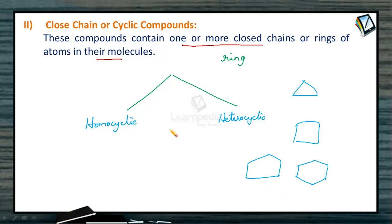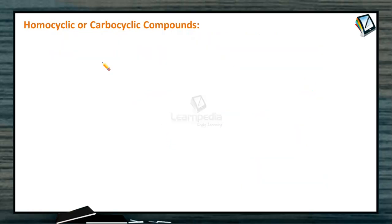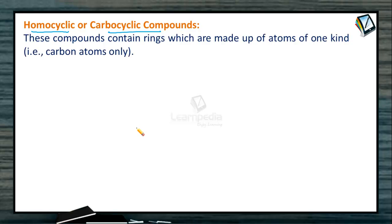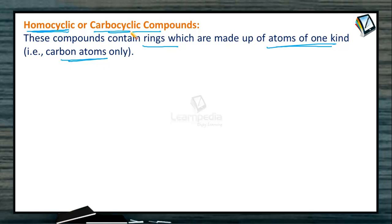The closed chain compounds are divided into two types. The first is homocyclic or carbocyclic compounds. These are compounds which contain rings made up of atoms of only one kind — the entire ring is made up of only carbon atoms. Since the ring consists solely of one element (carbon), we call them homocyclic or carbocyclic compounds. These are further divided into two types: alicyclic and aromatic.